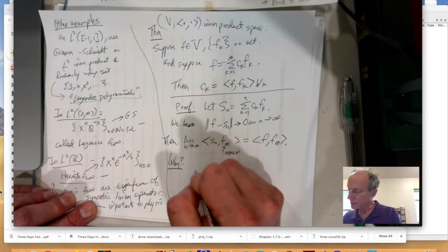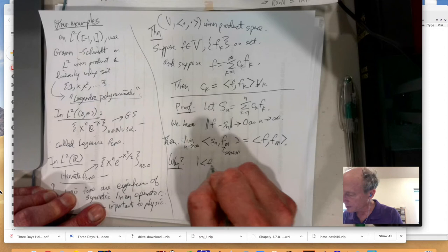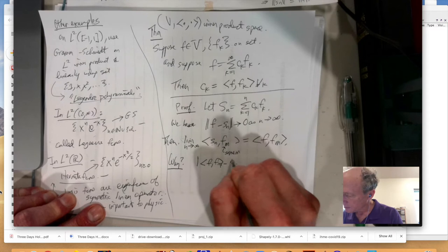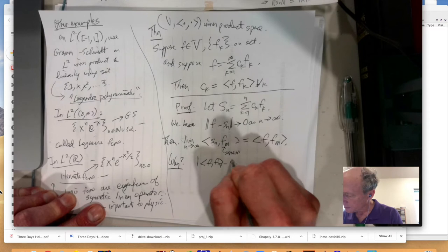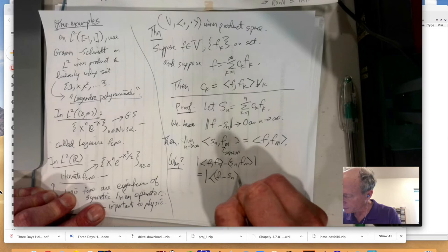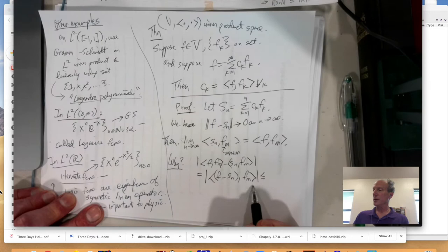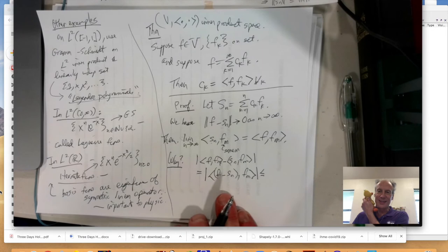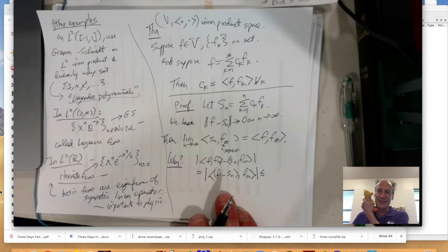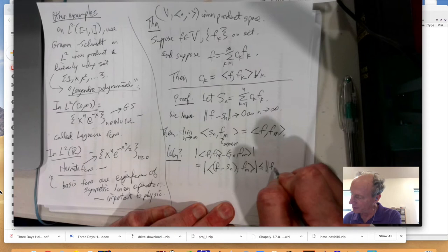And, so, that means in particular that, if you take the limit as N goes to infinity of the inner product of SN with FM for some M, this is the same thing as the inner product with F with FM. Okay, why is that? Well, if you take the difference between the two. This is equal to F, the F minus SN, FM. And then, there's an inequality that involves inner products. Who knows what that is? That's right, Fred!